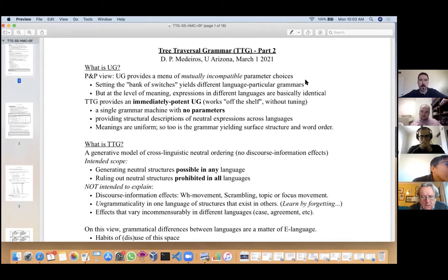These grammars are mutually antagonistic—you have the grammar of English and not Japanese or Mohawk. At the same time, there's the recognition that at the level of meaning, the base structure, expressions in different languages are identical or nearly so.